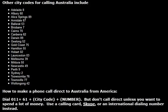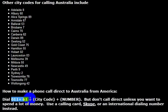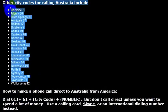Anyway, if you want to know how to call Australia, it's very simple to make an international phone call to Australia from any phone in the United States. All you do is dial 011 plus 61, and then you dial the city code and the number.